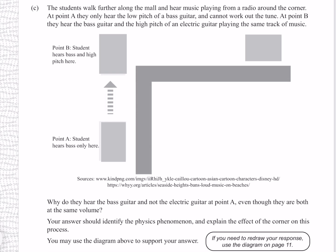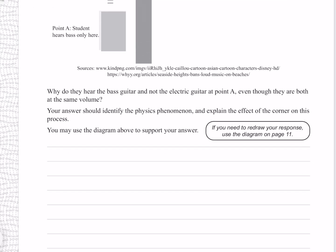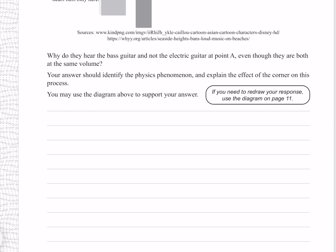The students walk further along the mall and hear music playing from a radio around the corner. At point A they only hear the low pitch of a bass guitar and cannot work out the tune. At point B they hear the bass guitar and the high pitch of an electric guitar playing the same track of music. Why do they hear the bass guitar and not the electric guitar at point A, even though they are both at the same volume? Your answer should identify the physics phenomenon and explain the effect of the corner on this process.